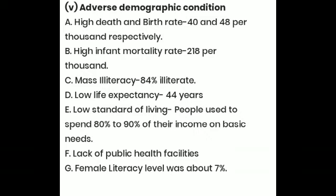Mass illiteracy was as high as 84%. Low life expectancy: due to lack of basic amenities, the average lifespan of an Indian was very low — as low as 44 years. Low standard of living and lack of public health facilities like drinking water and sanitation were major issues. Housing facilities were also not available, with increasing numbers of slums and poor living conditions. The female literacy level was still lower, at hardly 7%.